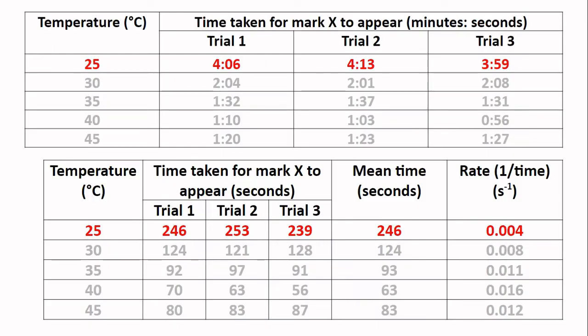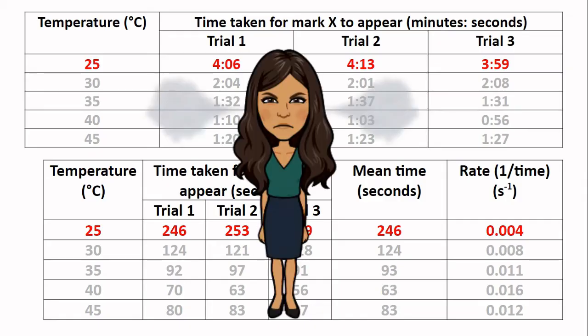Let's take our first calculation. In our raw data table for 25 degrees, we have the trial one reading for four minutes and six seconds. It always surprises me how many students get the basics of this part incorrect. I find students will get their calculators and type in 4.06 and simply multiply that by 60. But don't forget that converting minutes into seconds doesn't work like that. I also get students who would type in 4.06 plus 4.13 plus 3.59 into a calculator and then divide the total by three and tell me that the answer they get is the mean time taken.